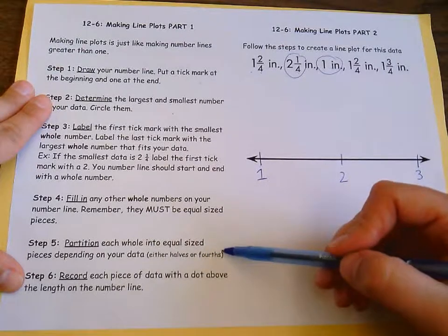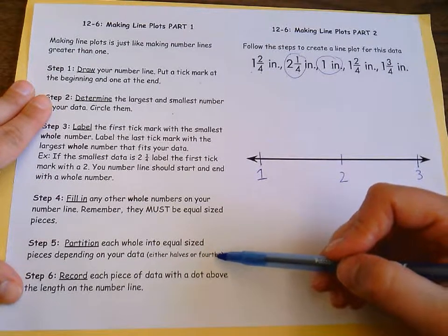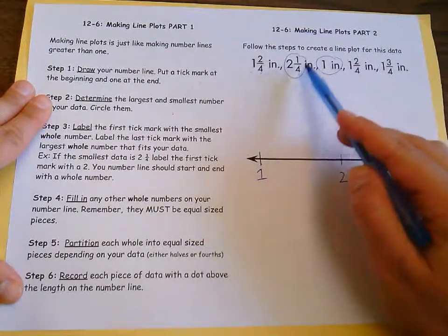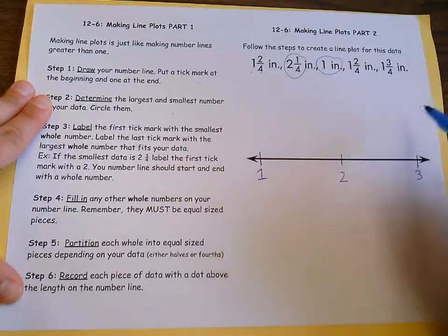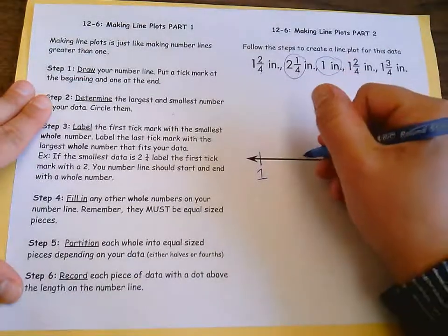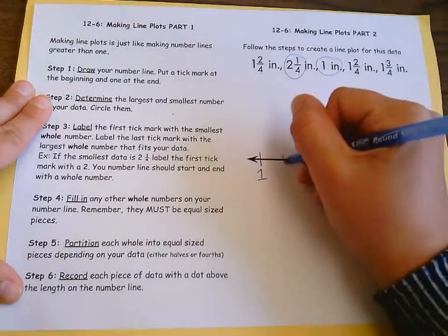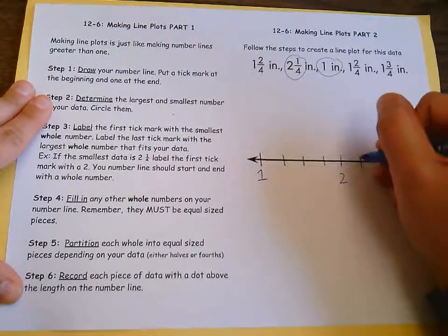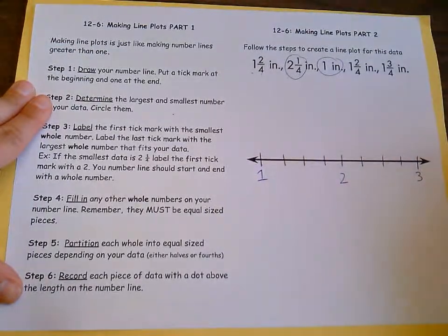Now I need to partition each whole into equal size pieces depending on my data. So I'm either going to do halves or fourths. So looking at my data, all of our fractions are fourths, so I'm going to partition it into fourths. And that's for each whole, and I always make a half and then cut each half in half.